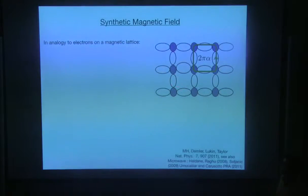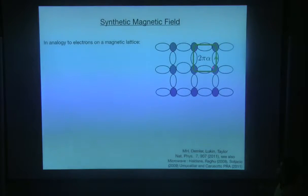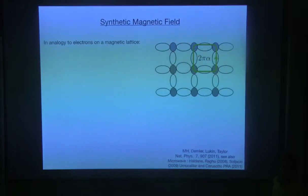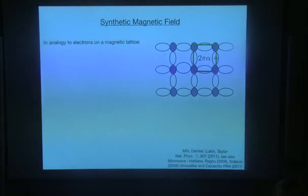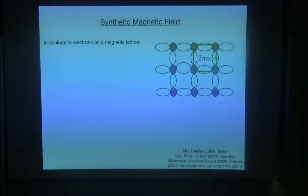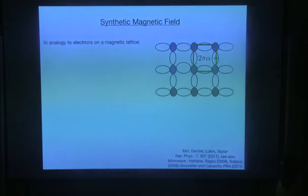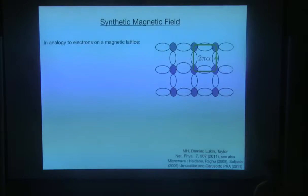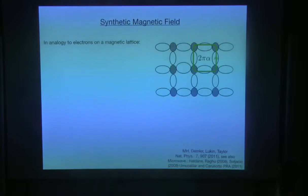What we really need is the following. Let's assume that we have a two-dimensional array of ring resonators coupled to each other. The presence of a magnetic field for these photons boils down to one simple criterion: if a photon hops around a plaquette — in a square lattice it goes around a square plaquette — it should acquire a non-zero phase. If it goes in the opposite direction, it should acquire the negative phase. So if we manage to have this non-symmetric phase, where going one way acquires one phase and the opposite way acquires the negative phase, then we have an effective magnetic field, very similar to an electron going around a magnetic flux and acquiring an Aharonov-Bohm phase.